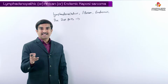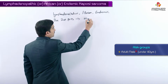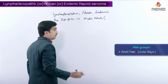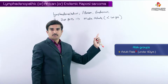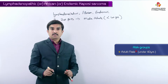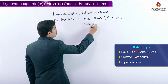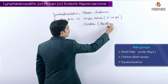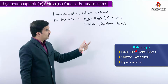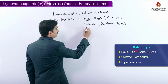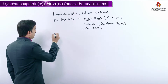The predominant risk groups are male adults under the age of 40. Children of both sexes are affected in equatorial Africa. In other regions, male adults under the age of 40 are more commonly affected. So these are the predominant risk groups. Now let us talk about the cutaneous lesions.